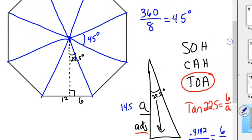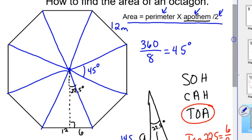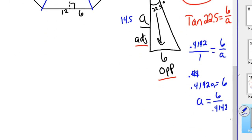So we know the apothem is 14.5. The perimeter, each side is 12 meters, so the perimeter would be 12 times 8. So 12 times 8 times the apothem of 14.5, all divided by 2. So if you calculate all that, you've got the area of this thing whipped.